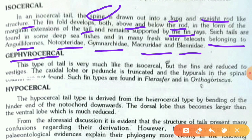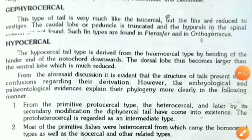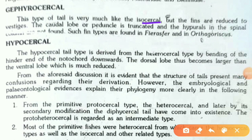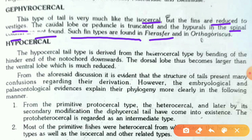The gephyrocercal tail is very similar to the isocercal tail, but the fins are reduced to vestiges. The caudal lobe or peduncle is truncated, and the hypurals in the spinal column are absent. Such fin types are found in Regalecus and Orthagoriscus.